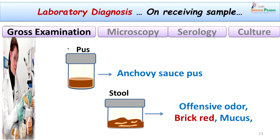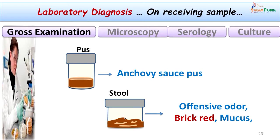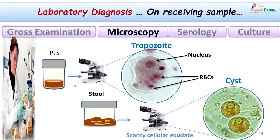We have various modalities for lab diagnosis as discussed. Gross examination of the specimen gives us many clues. The pus was very typical here — anchovy sauce pus, almost chocolate brown in color, thick and mucoid. The stool specimen was brick red in color with mucus flakes, copious and offensive in odor.